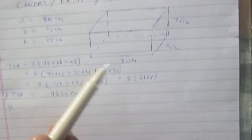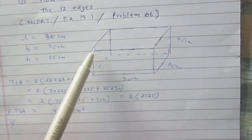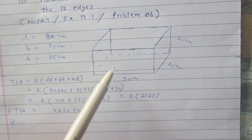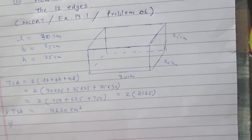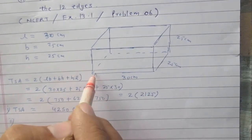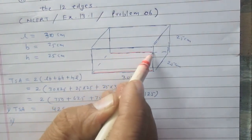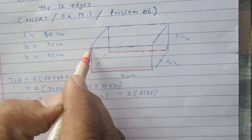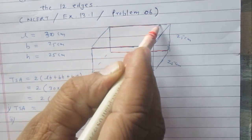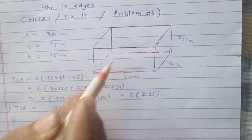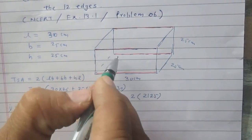In the second part, we are to find the length of tape used. The tape is used along the edges. This cuboid has 12 edges. Out of these 12 edges, four edges are along its length — we can see the first, second, third, and fourth edge along the length.